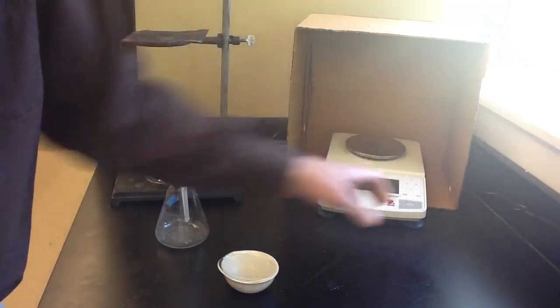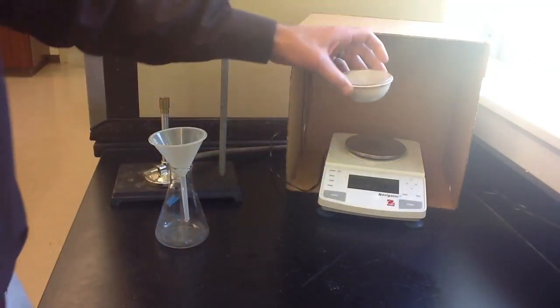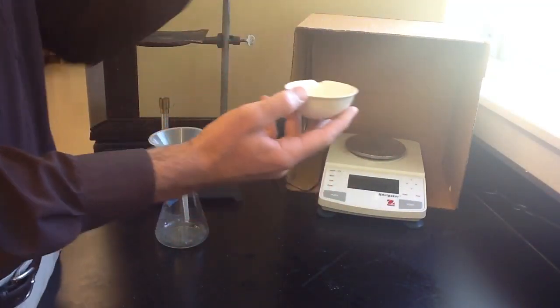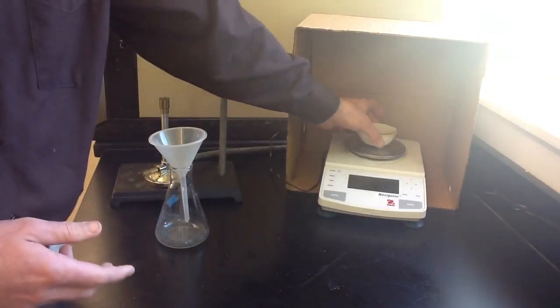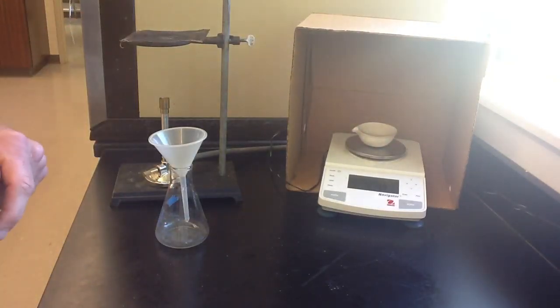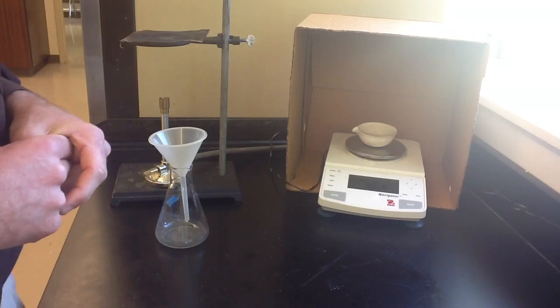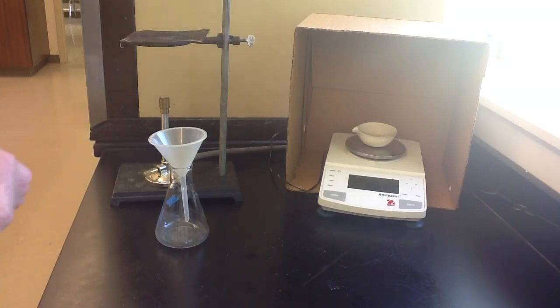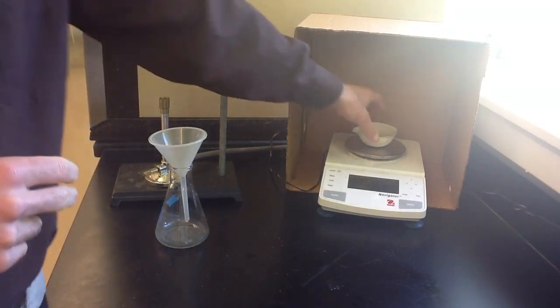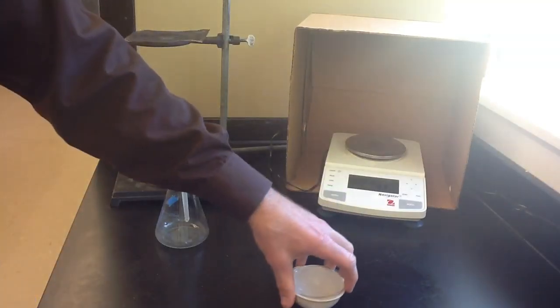The procedure is to first take an evaporating dish and a watch glass. We're going to get the mass of this as it's empty. And the mass of the empty evaporating dish and watch glass is 80.67 grams.